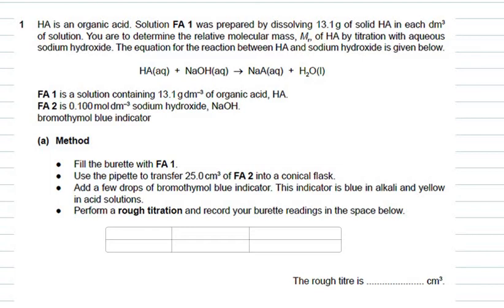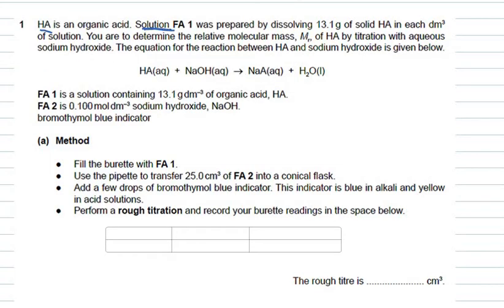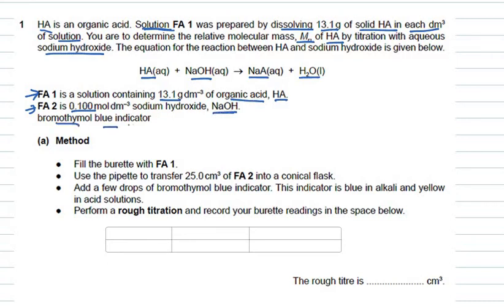Here is a sample question from a past paper titration practical. It says HA is an organic acid and solution FA1 was prepared by dissolving 13.1 grams of solid HA in each dm³ of the solution. You are to determine the relative molecular mass of HA by titration with aqueous sodium hydroxide. FA2 is a solution of 0.1 mol/dm³ NaOH, and bromothymol blue indicator is also given.